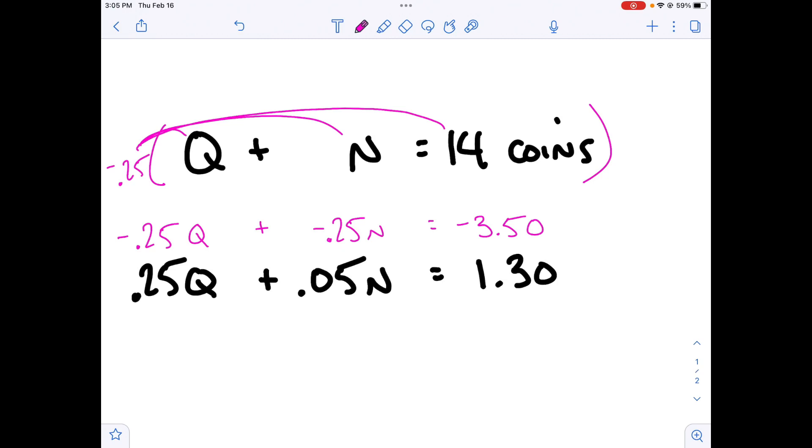So if I add our columns up, right, plus sign, the Qs get eliminated. So this is the eliminate step. I have negative 0.25 and 0.05. And for those who need a calculator, I guess you'd use it. But you'd get negative 0.2 or 0.20N if you put the 0 in there. And 3.5 with a negative and 1.3 with a positive. When we add those up, I'm going to get negative 2.20.